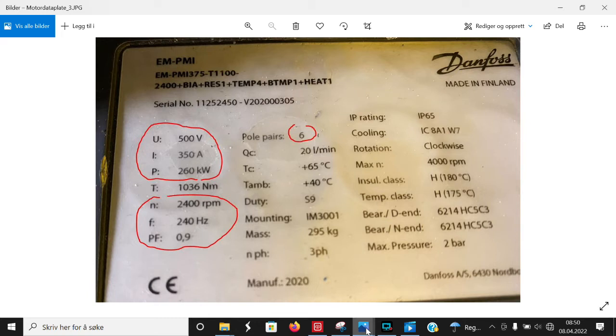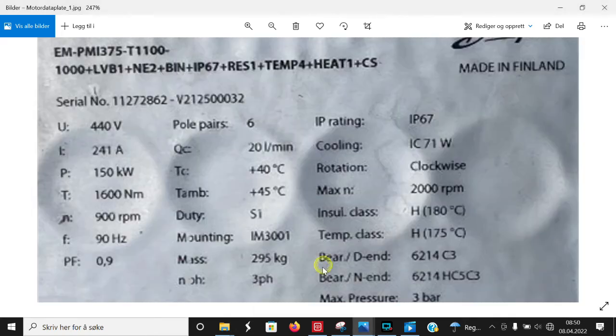Different motors maybe have the specifications like this. Here we have our motor nominal voltage at 900 RPM and 90 Hz. Still it is a 6-pair pole number motor.